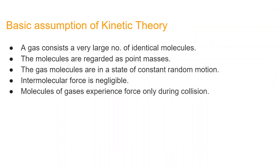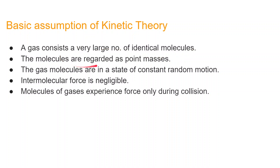For finding how pressure is exerted by an ideal gas, we need to assume some theory. These assumptions are based on scientific method and should all make sense. The first assumption: a gas consists of a very large number of identical molecules — that is 6.03 × 10²⁶ — a huge number. This makes sense. The molecules are regarded as point masses because the molecules are very microscopic and very small.